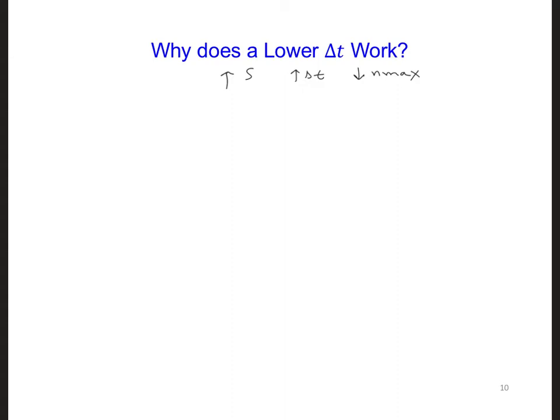Since we have a very basic FDTD code with only free space, there aren't a lot of possibilities for why a lower dt is needed.